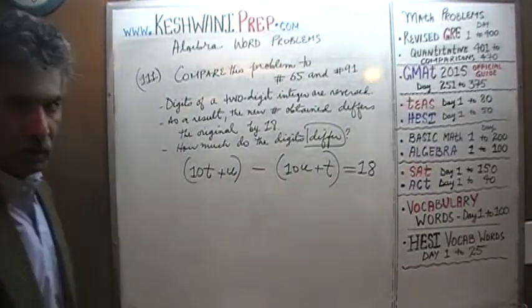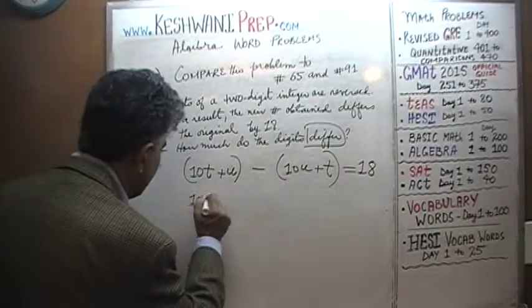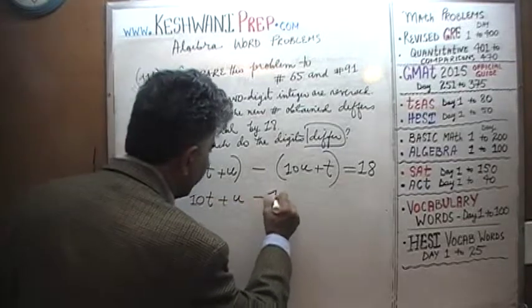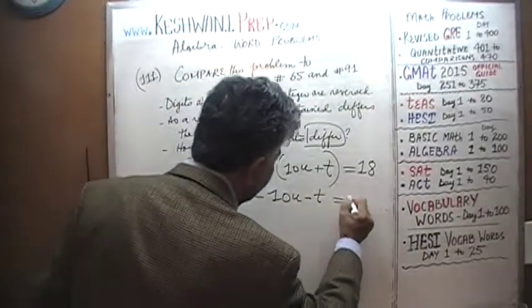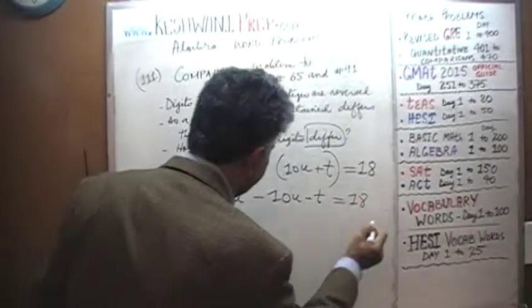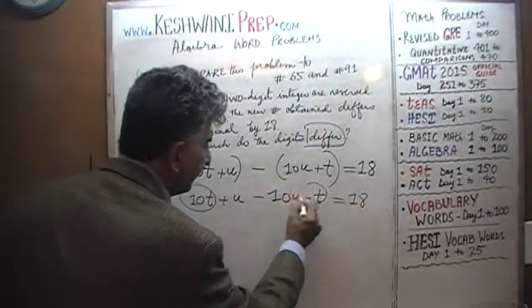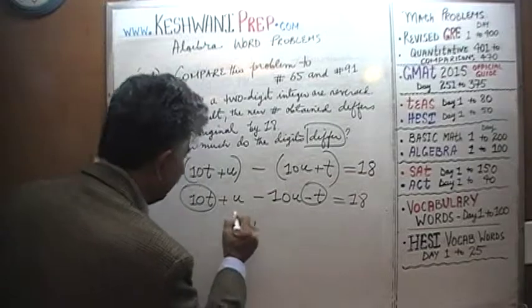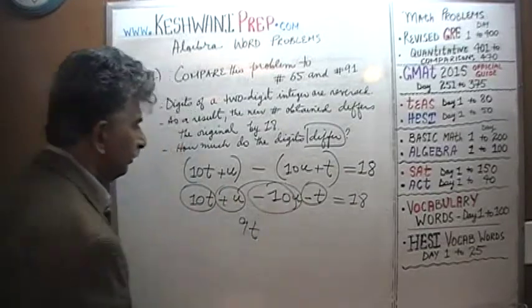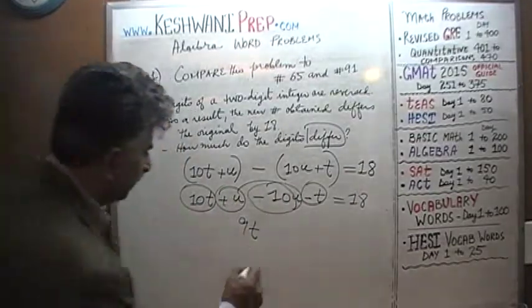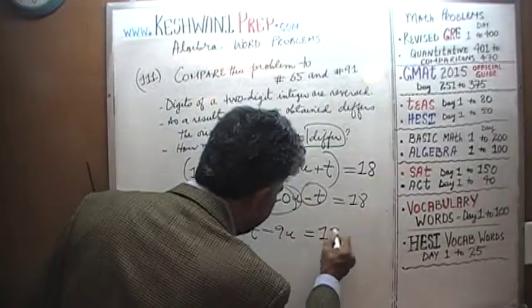Now we do our work. Opening the parentheses, we get 10t plus u minus 10u minus t equals 18. We get 10t minus t — that's 9t — and then u minus 10u gives us minus 9u. So 9t minus 9u equals 18.